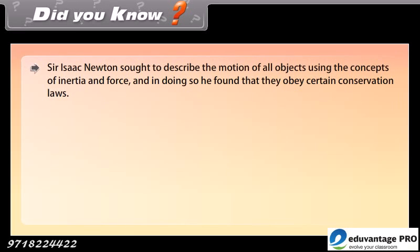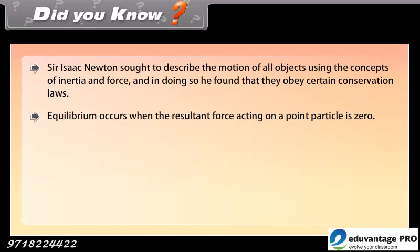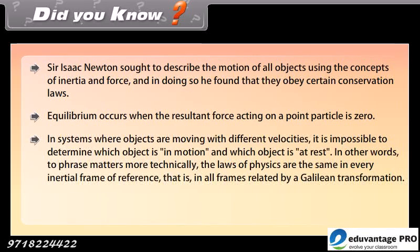Did you know? Sir Isaac Newton thought to describe the motion of all objects using the concepts of inertia and force, and in doing so, he found that they obey certain conservation laws. Equilibrium occurs when the resultant force acting on a point particle is zero. In systems where objects are moving with different velocities, it is impossible to determine which object is in motion and which object is at rest. In other words, the laws of physics are the same in every inertial frame of reference, that is, in all frames related by a Galilean transformation.